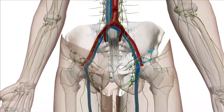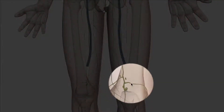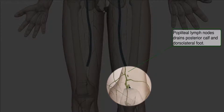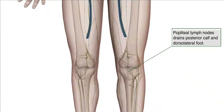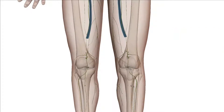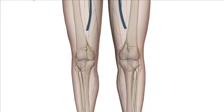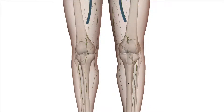Last but not least are the popliteal lymph nodes. These drain the dorsolateral foot and the posterior calf. The associated pathology is foot or leg cellulitis. If a patient presents with cellulitis of the lower extremities — redness, painful lower extremities, warm to touch, skin erythema — they are going to have painful lymphadenopathy right around the popliteal area, right behind their kneecap. When a patient complains of lymphadenopathy, there is usually a nearby infection where the lymphatic system is sampling antigens and producing reactive lymphadenopathy.